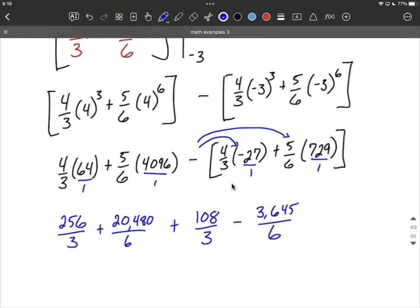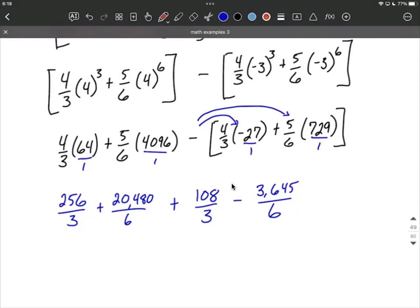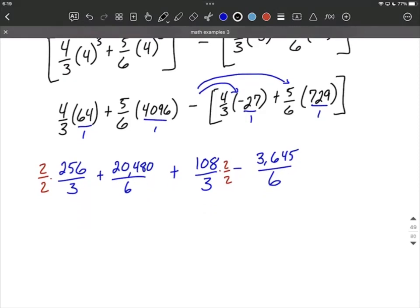From here, we could do some simplifying down along the way first, but my idea is, looking at those fractions, we've got 6 and 3 as our denominators. Let's go ahead and do the work to get a common denominator. So in this case, let's aim for 6 as our common denominator, and I think life's going to be the easiest it can be if we go that direction. So I'm going to multiply this first fraction by 2 over 2 in the hopes of getting a 6 there, and then this other fraction over here by 2 over 2 again. So from here, we have 2 times 256 is 512 over 2 times 3 is 6 plus 20,480 over 6 plus 108 times 2 is 216 over 3 times 2 is 6 minus 3,645 over 6.